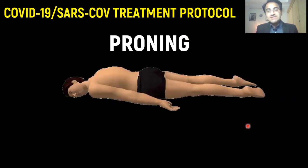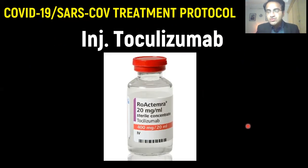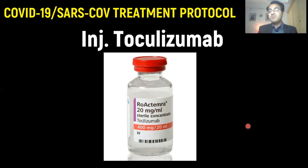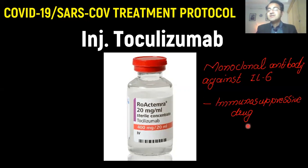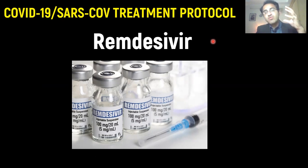Proning is a very important technique and position that improves oxygenation levels. One important drug being used is injection tocilizumab, which is an immunosuppressant. It is a monoclonal antibody that binds IL-6, suppressing the immune system and protecting the body from damage caused by its own immune response. Tocilizumab has been found quite effective in the treatment of COVID-19. Remdesivir is an important antiviral used to treat COVID-19 that inhibits viral proliferation.